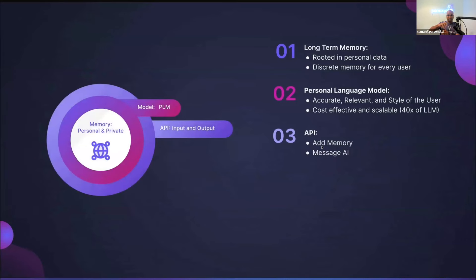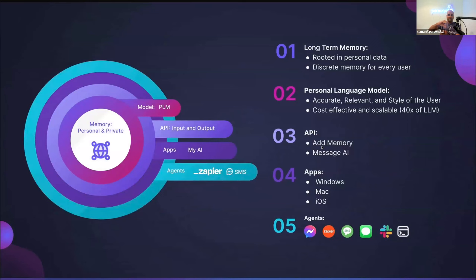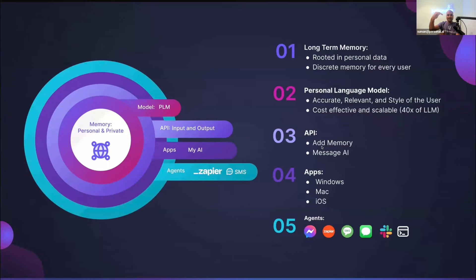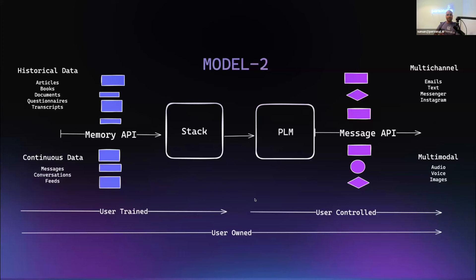Finally, there is the agent ecosystem. Think of agents as bots or integrations that can be made available in multiple different places, fundamentally based on the API to each of your models — a full-blown system entirely in your control. How it works: you come in, you train it, and then you use it. You could use all your historical data — articles written, books written, transcription data, any authored content you want your model to replicate and reflect with your own identity. Continuous data is very important as it acts almost like reinforcement learning; messages, conversations, feeds could also feed into your stack.